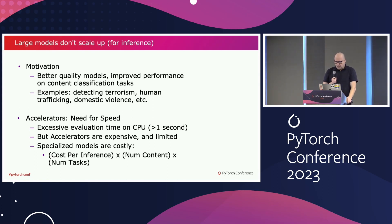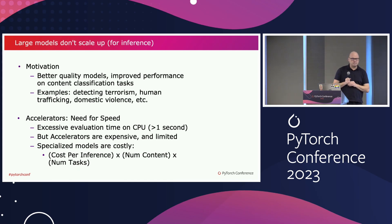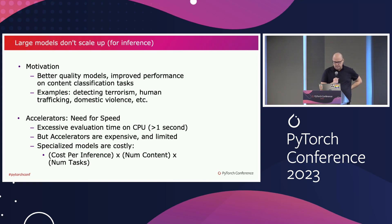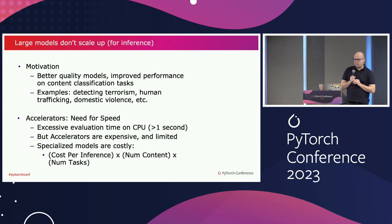The obvious answer to improving the speed of evaluation of these models is to use accelerators, because CPUs have excessive evaluation time. Depending on how we optimized the settings, we saw between 1 and 10 seconds of inference latency for these large language models used for classification. But accelerators are also expensive in terms of power footprint and how many you can fit in the data center, so there is only a very limited capacity.